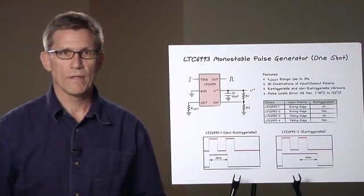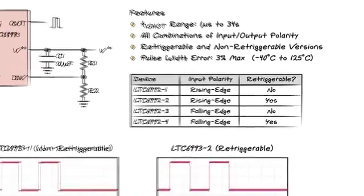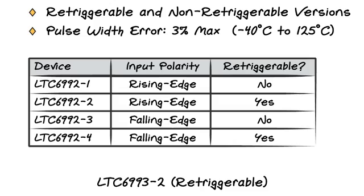The next part in the family is the LTC6993 monostable pulse generator or one-shot. This part also has four different versions covering which edge is triggered, be it rising or falling, and whether it's retriggerable or non-retriggerable.